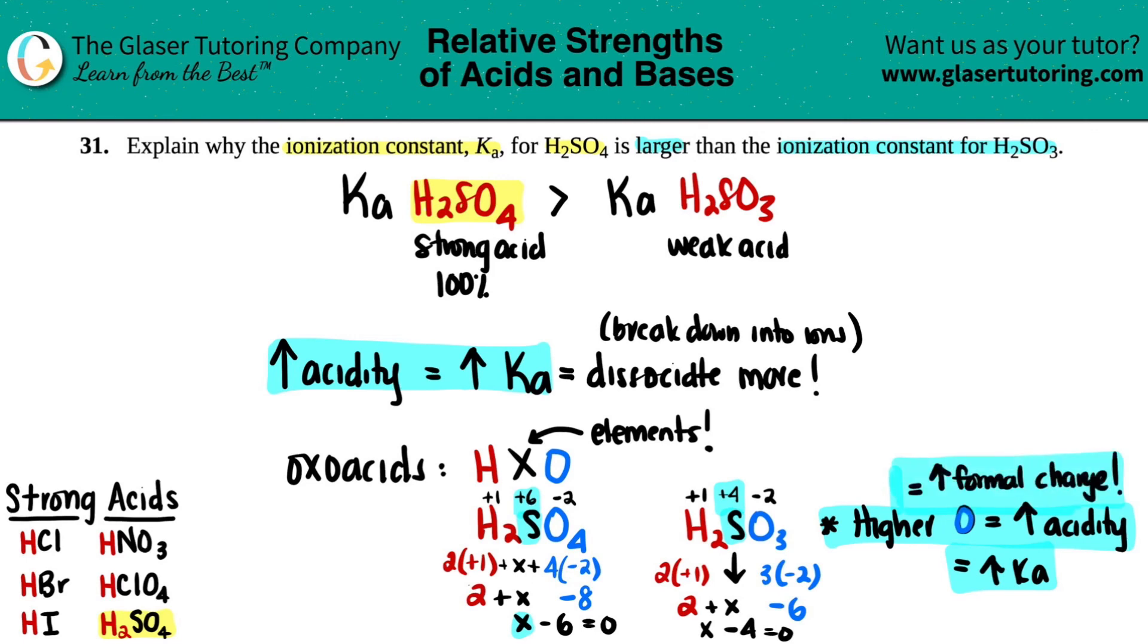Just depends on which one you want to say. So strong acid versus weak acid, right off the bat. H2SO4 is one of your strong acids. H2SO3, not so much. Higher the acidity, higher the Ka. If you want to go the oxoacid route, higher number of oxygens equals higher acidity, higher Ka. That comes from the higher formal charges. So because sulfur was a plus six versus a plus four, this would be much more acidic than this one.